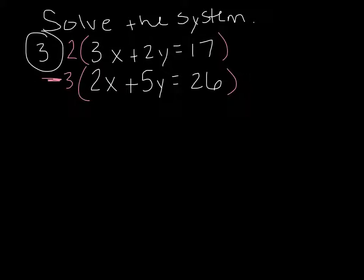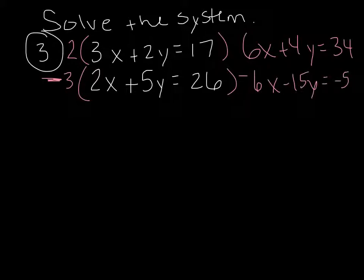So everything on top gets multiplied by 2. You have 6x plus 4y equals 34. And on bottom you have negative 6x minus 15y equals negative 52. So those cancel. 4y plus a negative 15y is negative 11y. 34 minus 52, that's going to give you negative 18.